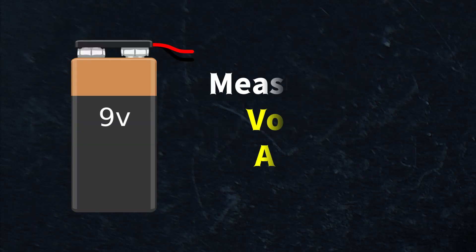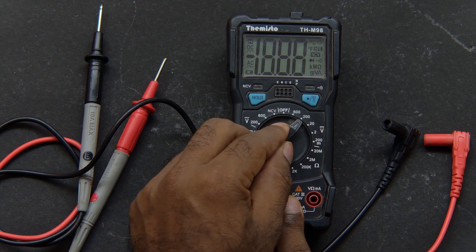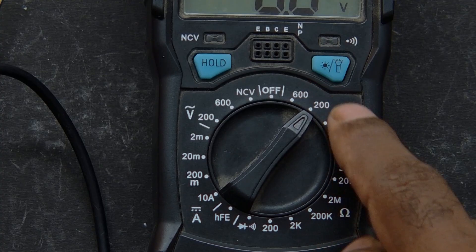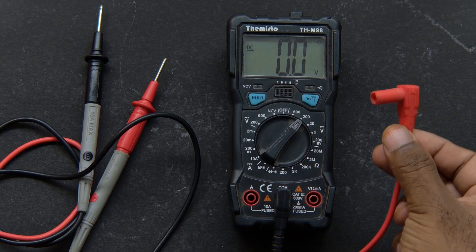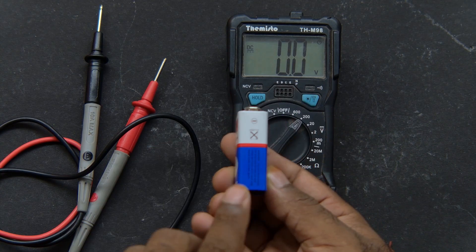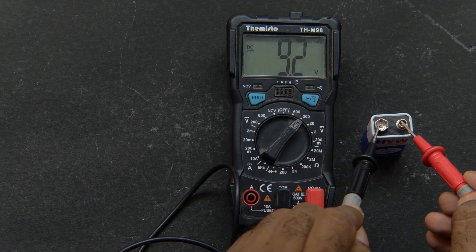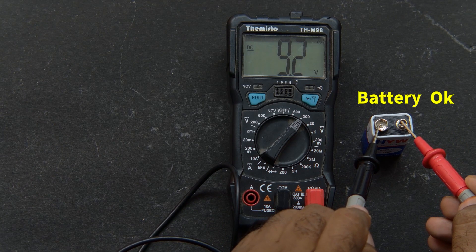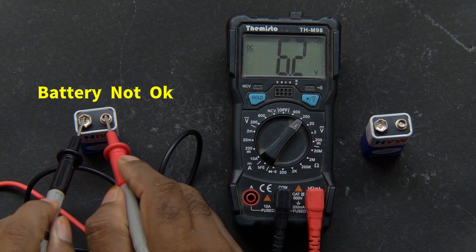Let's start with something simple: measuring the voltage of a battery. Turn the dial to the section with a V and a straight line—that means DC voltage. Now insert the black probe into common and red into voltage ohm milliampere. Touch the red probe to the positive side of the battery and the black to the negative. If the battery is good, you will see a number close to its rated voltage. For example, a nine volt battery should read around 8.5 to 9.1 volts.